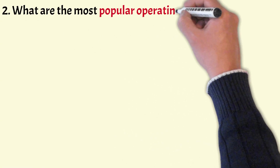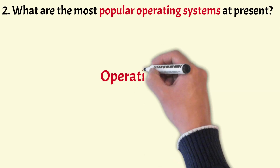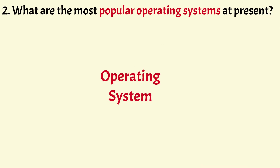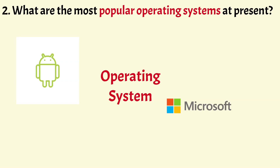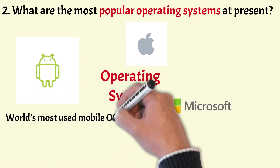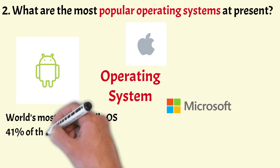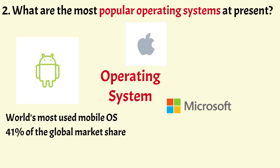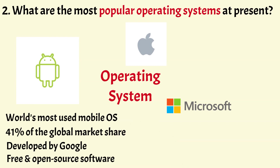What are the most popular operating systems at present? Operating systems have evolved from slow and expensive systems to fast, powerful and affordable in the modern world. The most popular operating systems at present are Android, Windows and iOS. The Android operating system is the world's most used mobile operating system with over 41% of global market share. It is developed by Google for smartphones and tablets and is free and open source software.